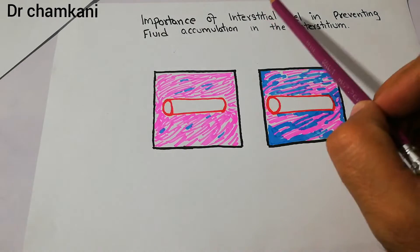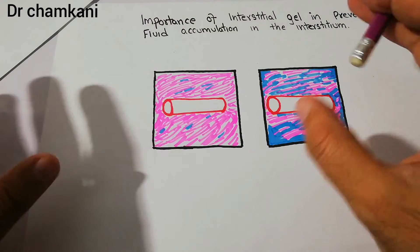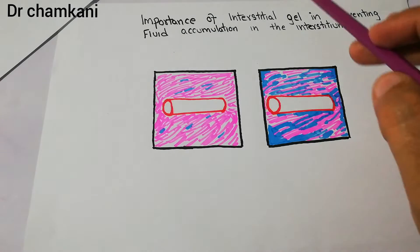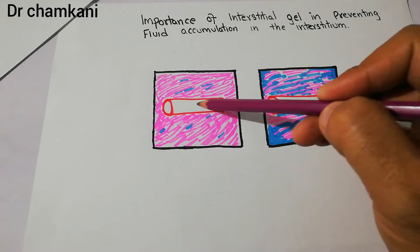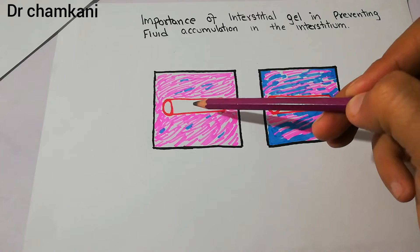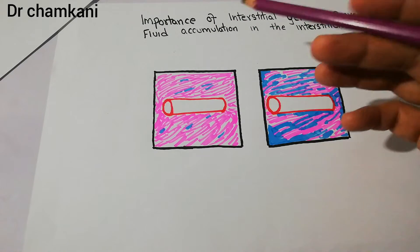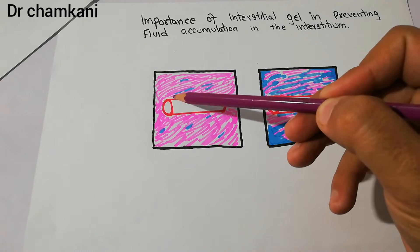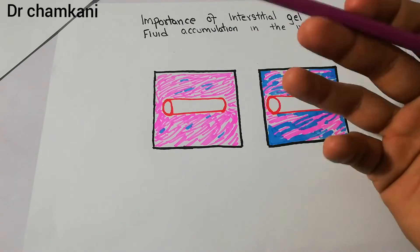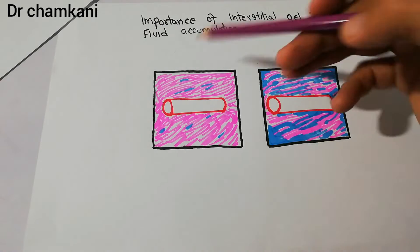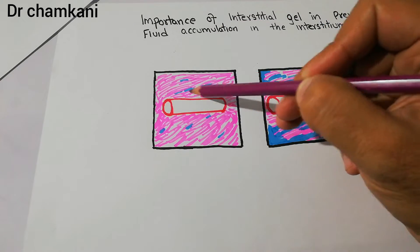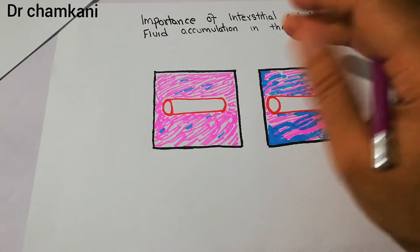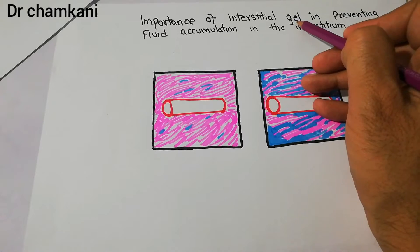The interstitial gel is the normal interstitium in normal circumstances. This is the interstitium and this is the capillary. Blood is coming from the heart through the aorta, through the arteries, and finally arriving at the capillary level, where plasma transfer to the cells and diffusion of nutrients occurs at the interstitium and at the level of capillaries. Outside this capillary is the interstitium.